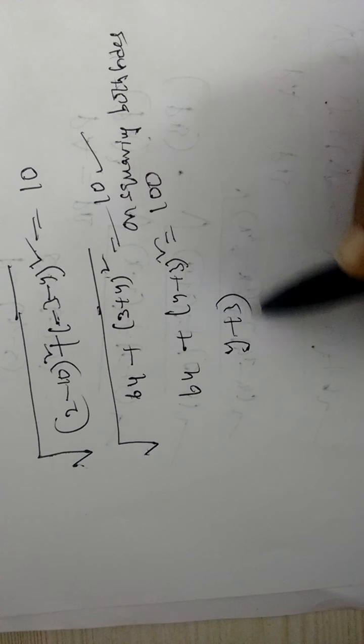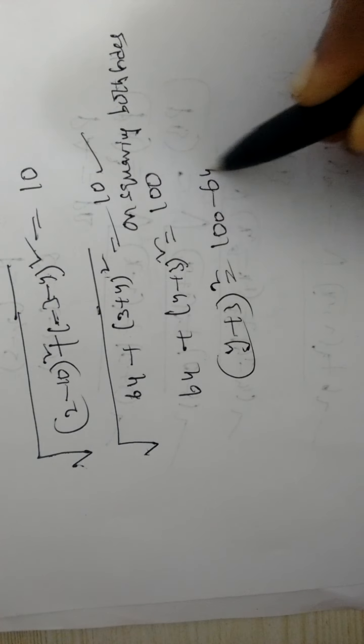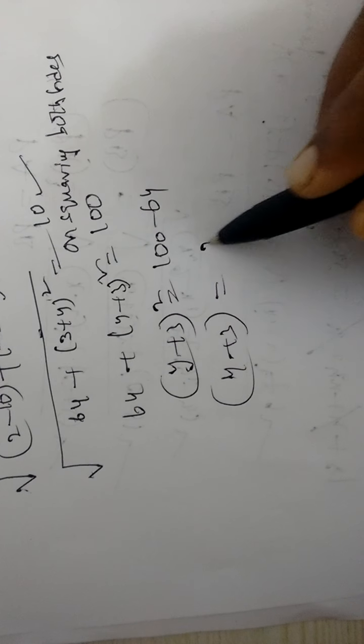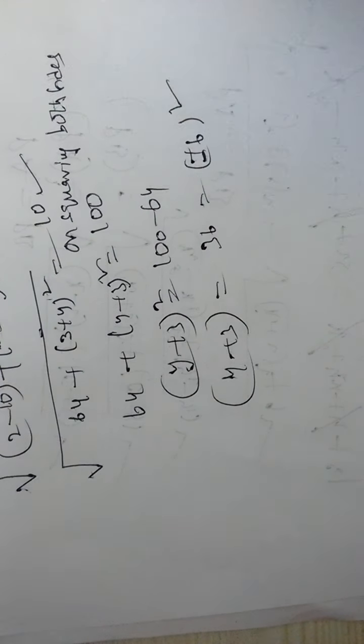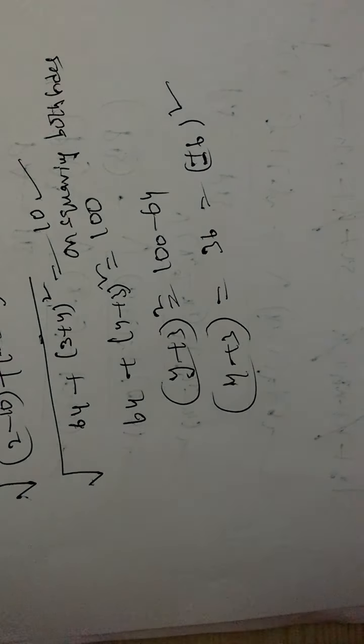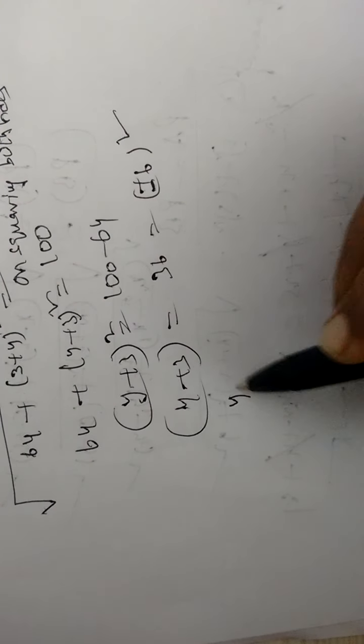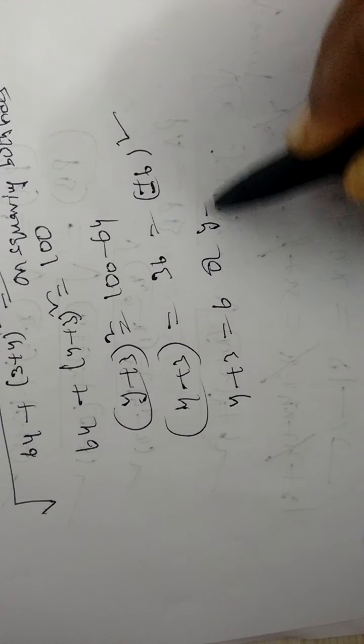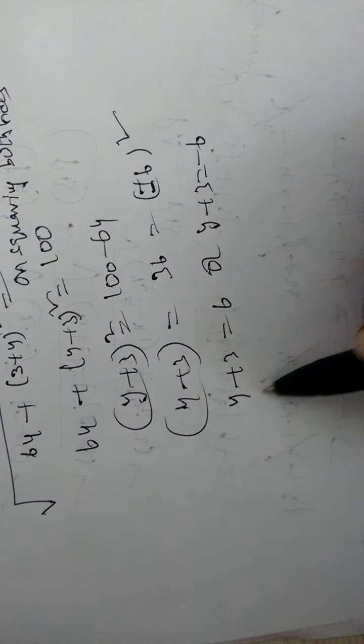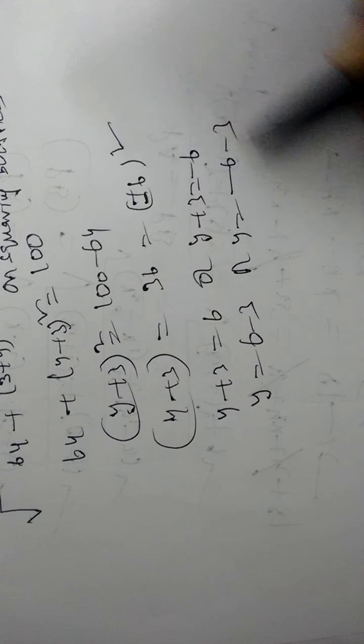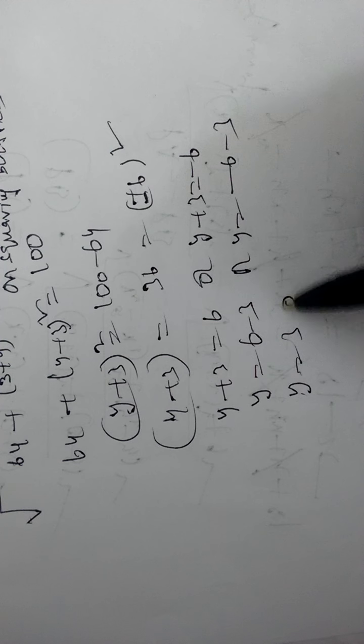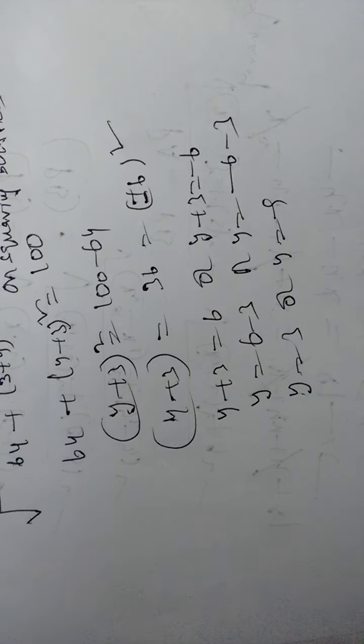(y plus 3) whole square is 100 minus 64. 100 minus 64 is 36. 36 is 6 square, plus 6 square or minus 6 square. Both plus 6 as well as minus 6. So y plus 3 equals 6 and y plus 3 equals minus 6. y equals 6 minus 3 or y equals minus 6 minus 3. y equals 3 or y equals minus 9.